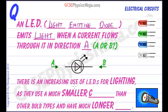There is an increasing use of LEDs for lighting. They use a much smaller current than other bulb types such as filament bulbs, and have a much longer life.